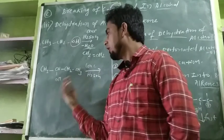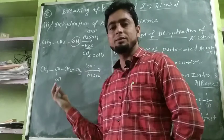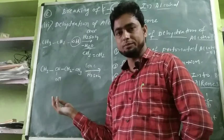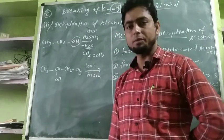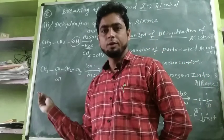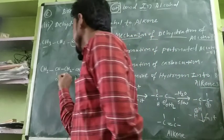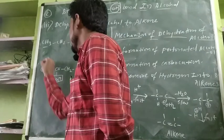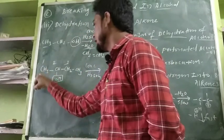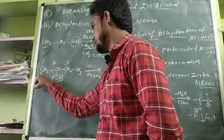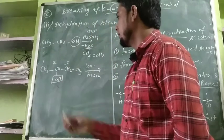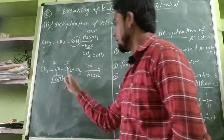Now, how do we remove the water molecule from this secondary alcohol? We take the water molecule from carbon number two (where OH is attached) and a hydrogen from either carbon number one or carbon number three, depending on which carbon the hydrogen is lost from.